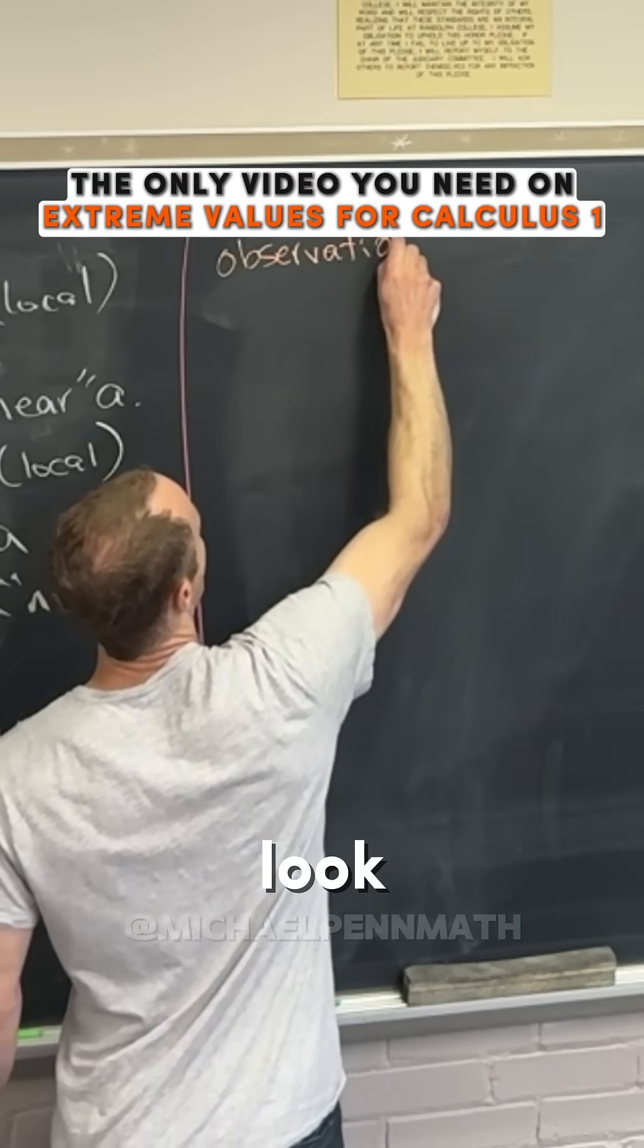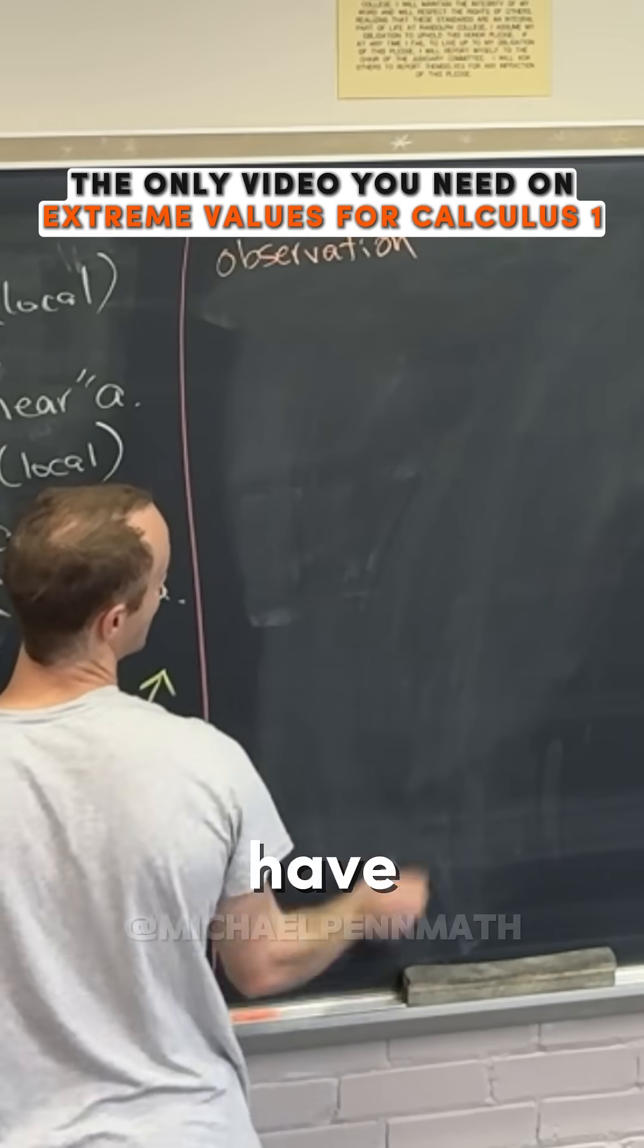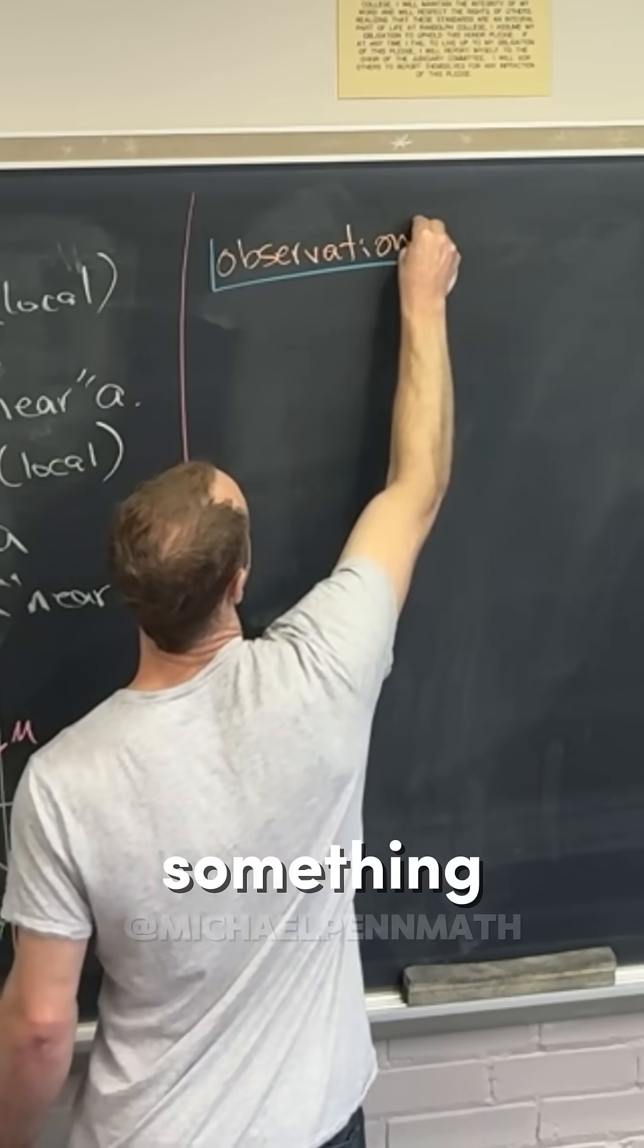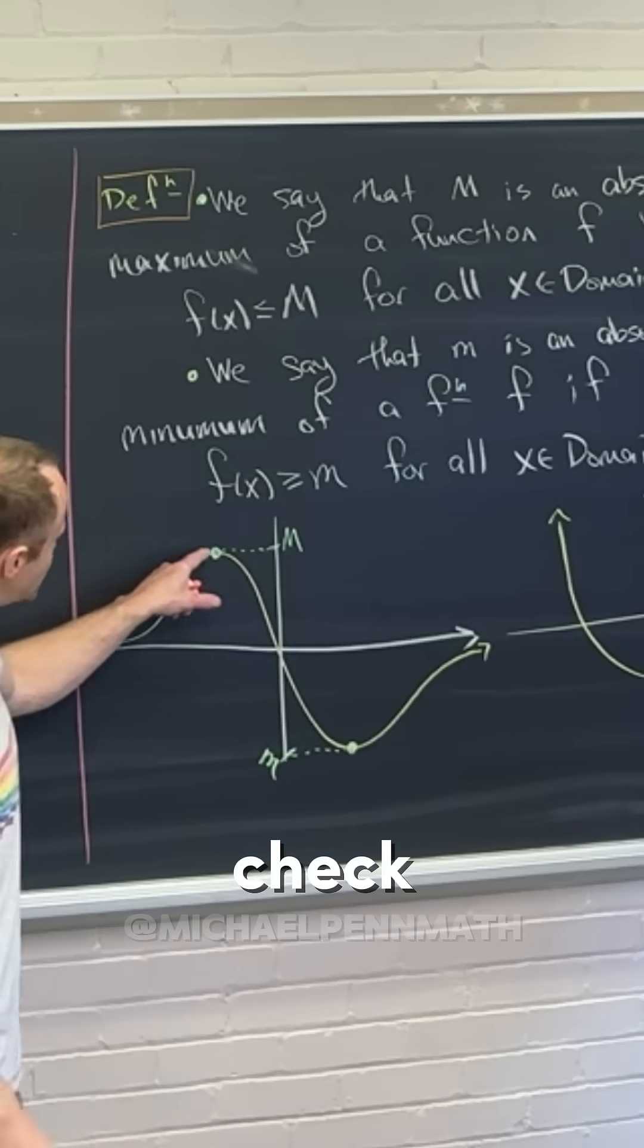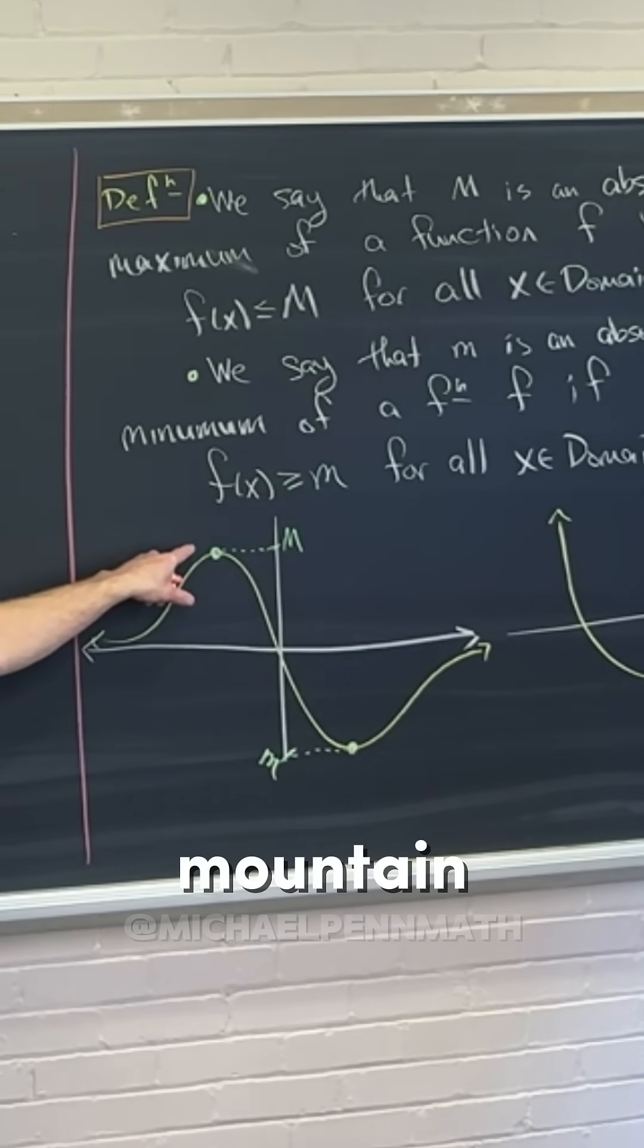Let's look at the examples that we have and see if we can see something happening. So over here, check it out, we've got a maximum - it's like the top of a mountain, right?